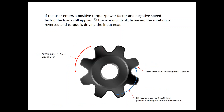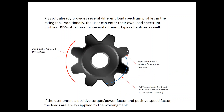If you enter a positive torque and a negative speed, the load still applies to the working flank; however, the rotation is reversed. Think of it as the negative speed being driven by the positive torque — the torque is driving this gear in counterclockwise rotation, and you have right-tooth loading on the right flank, which is your working flank, consistent with your original definition.